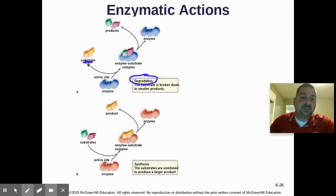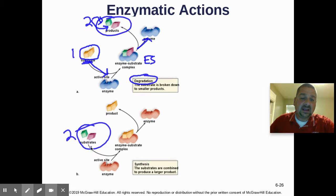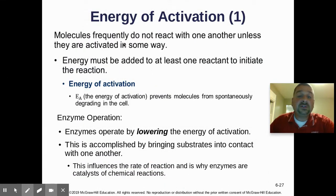Here's a visual of that. Degradation: one substrate goes into the active site as the ES complex, the enzyme is released to cause another reaction, and you end up with two products. Down here, dehydration synthesis: two substrates both fit into the active site, the enzyme performs dehydration synthesis, the enzyme is free to cause another reaction, and you get one joined product.